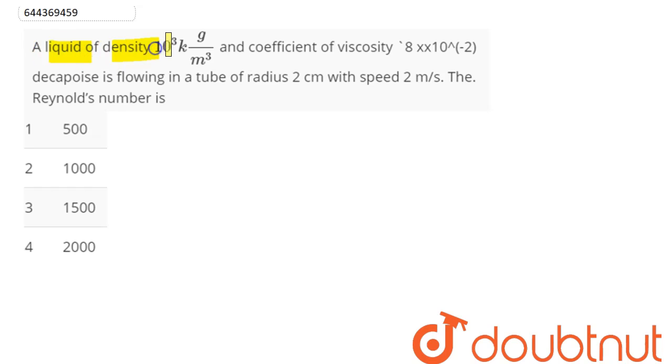Question is: a liquid of density 1000 kg per cubic meter and coefficient of viscosity 8 into 10 power minus 2 decapoise is flowing in a tube of radius 2 centimeter with speed 2 meter per second. The Reynolds number is?